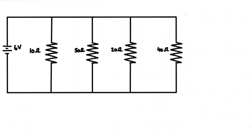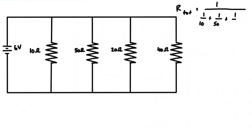First we need to find the total resistance. The total resistance of the circuit is equal to the inverse of the sum of each of the inverses of the resistances, so we have 1 over 10 ohms plus 1 over 50 ohms plus 1 over 20 ohms plus 1 over 40 ohms.